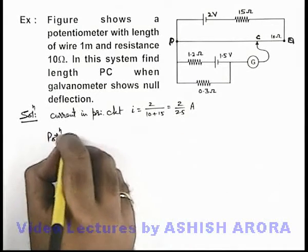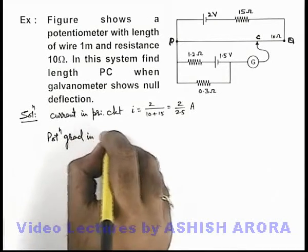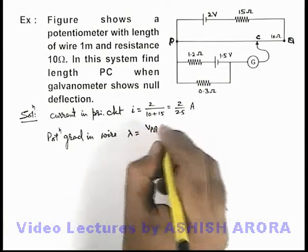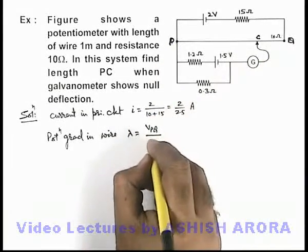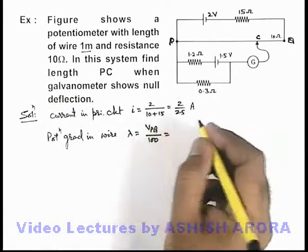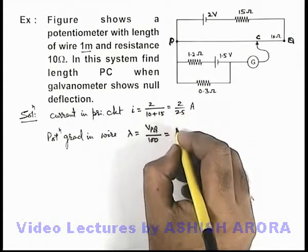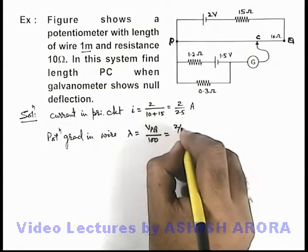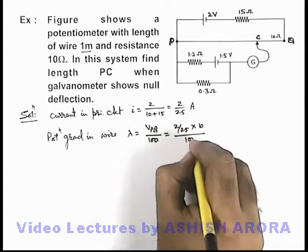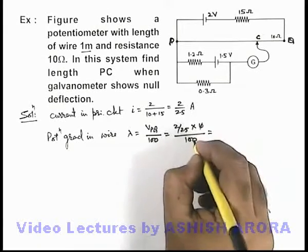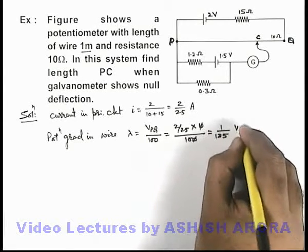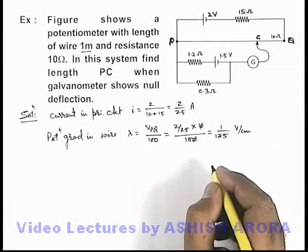If we calculate the potential gradient in the wire, then the value of lambda can be directly written as potential difference across terminals PQ of wire divided by hundred because it is of length 1 meter. So here Vpq can be written as iR, the current here is 2 by 25 ampere, so it'll be 2 by 25 multiplied by resistance 10 divided by hundred. On solving, this 10 gets cancelled out, it is 2 by 250 so it is 1 by 125 volt per centimeter.